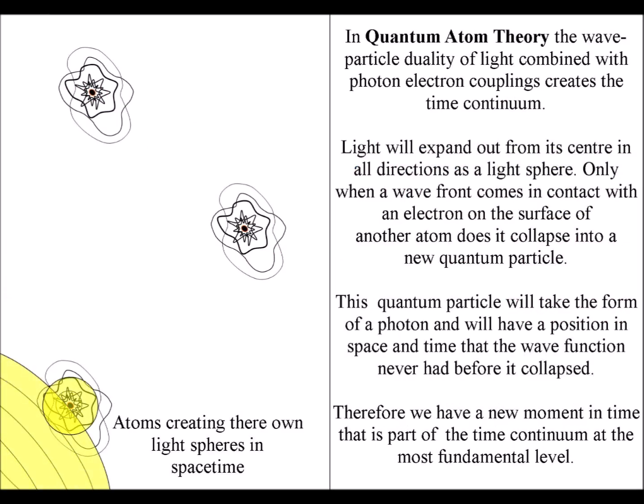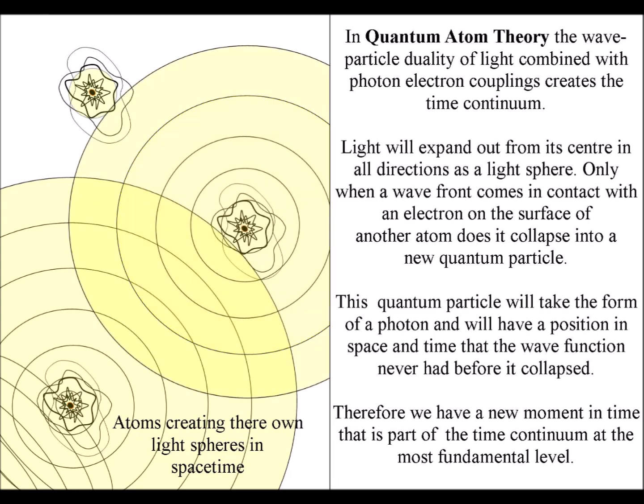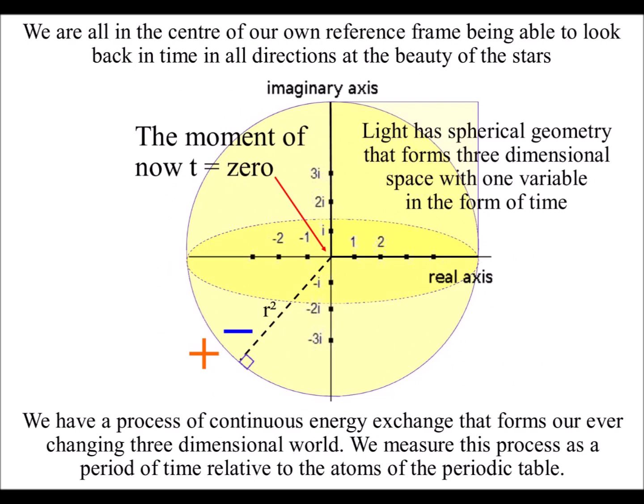Each point on the surface of the sphere has the potential to form a new spherical wavefront, with our three-dimensional world continuously changing with the movement of charge. The inner concave surface creates negative charge and the outer surface creates positive charge.